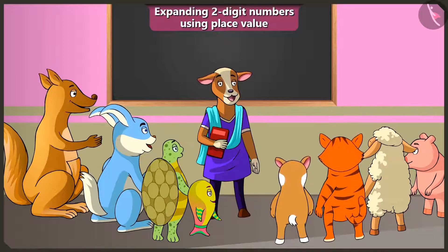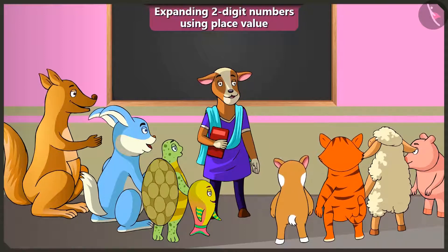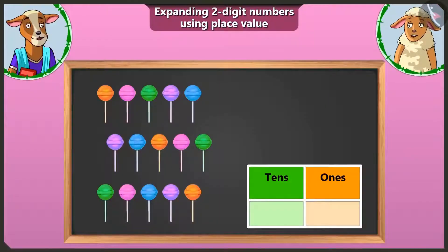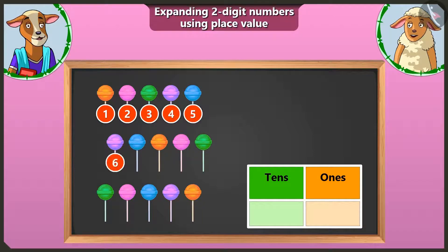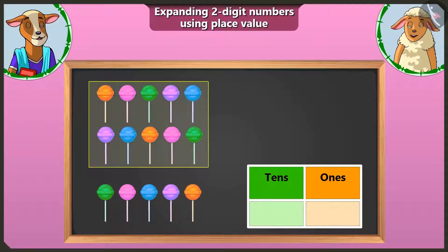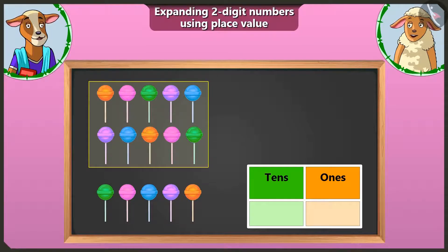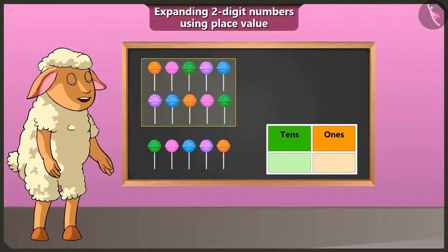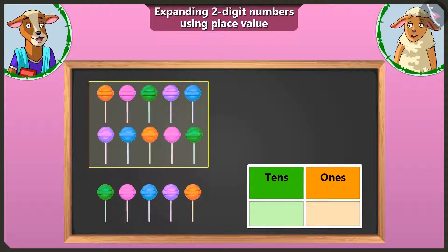So Billy, can you tell her how to write the figure ten here? Yes, like this. Correct. But I will show you another way of writing it. Look, here is a lollipop. Let us make a bundle of ten of these and write the number. One, two, three, four, five, six, seven, eight, nine and ten. And let us make a group like this. This is a group of ten lollipops. We have one group of ten lollipops. We will write one in the box of tens.